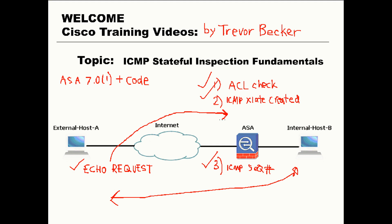Before ASA 7 code, the only thing that the ASA did was create an ICMP xlate entry to allow the translation to occur. Then the ICMP traffic would either get blocked or permitted based on the access list or security levels in place. No ICMP inspection occurred whatsoever.